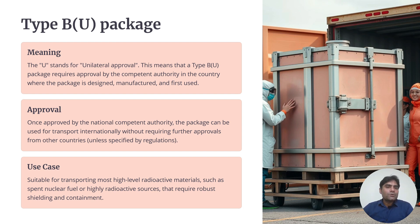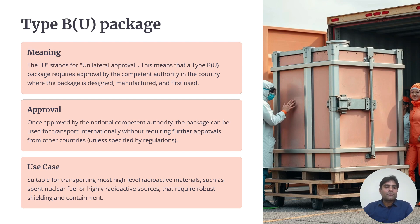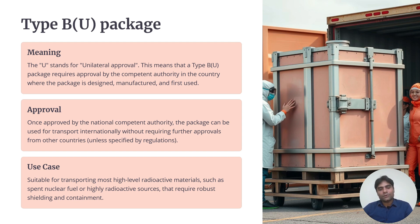For Type BU packages, once approved by the national competent authority, the packages can be used for transport internationally without requiring further approvals from other countries unless specified by regulations. Use cases include transporting most high-level radioactive materials such as spent nuclear fuel or highly radioactive sources that require robust shielding and containment.